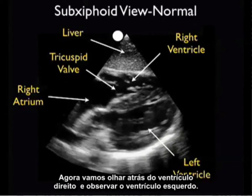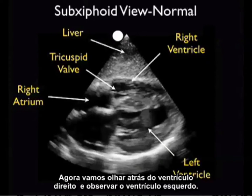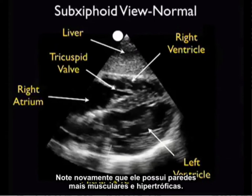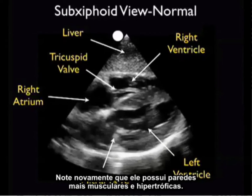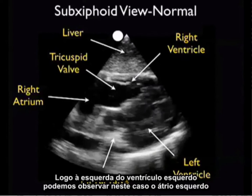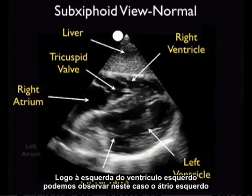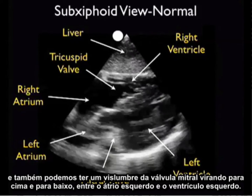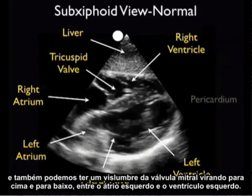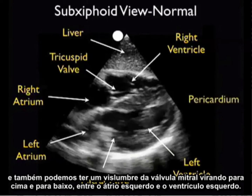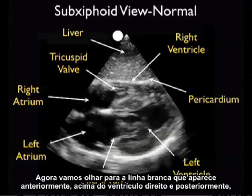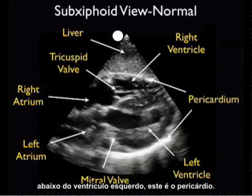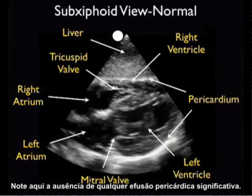Now let's look posterior to the right ventricle where we appreciate the left ventricle — notice again its more muscular and hypertrophic walls. Just to the left of the left ventricle, we appreciate the left atrium, and we also get a glimpse of the mitral valve flipping up and down in between the left atrium and the left ventricle. Now let's look at that white line both anteriorly above the right ventricle and posteriorly below the left ventricle — that is the pericardium.